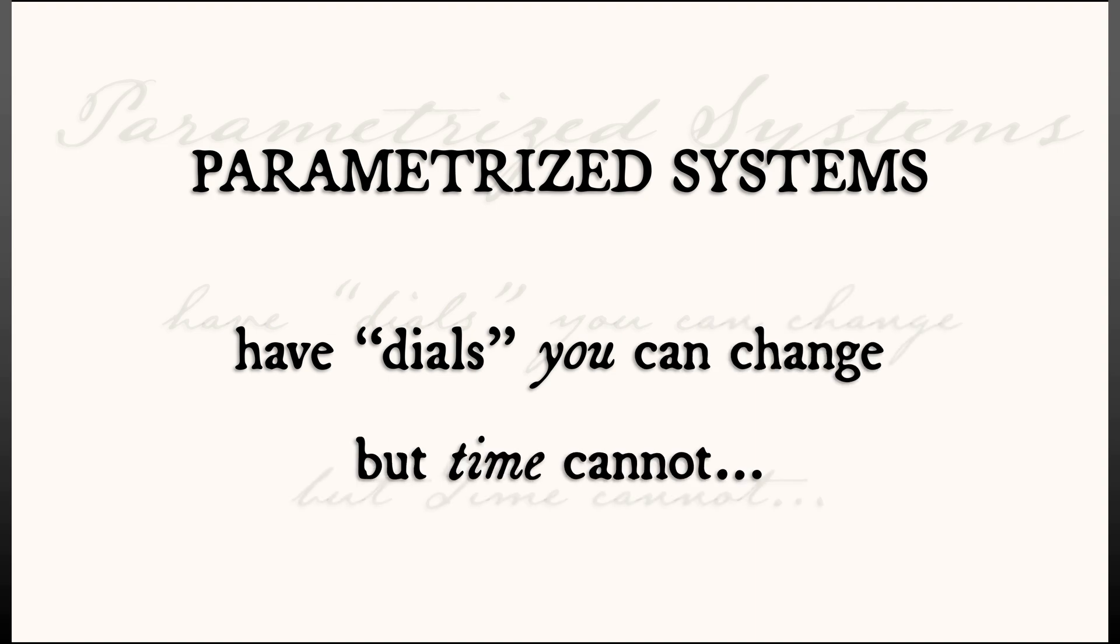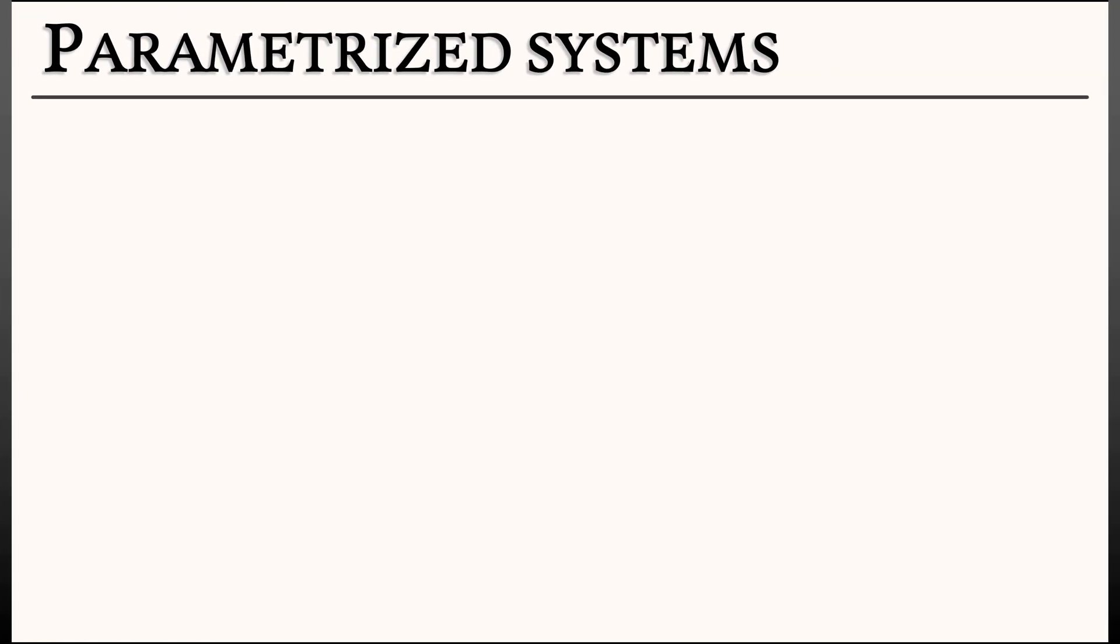In systems that are parametrized, you have parameters or dials that you can change even though time cannot. What do I mean by that? Well, let's consider systems that have a parameter. Let's say a single parameter, let's call it μ.